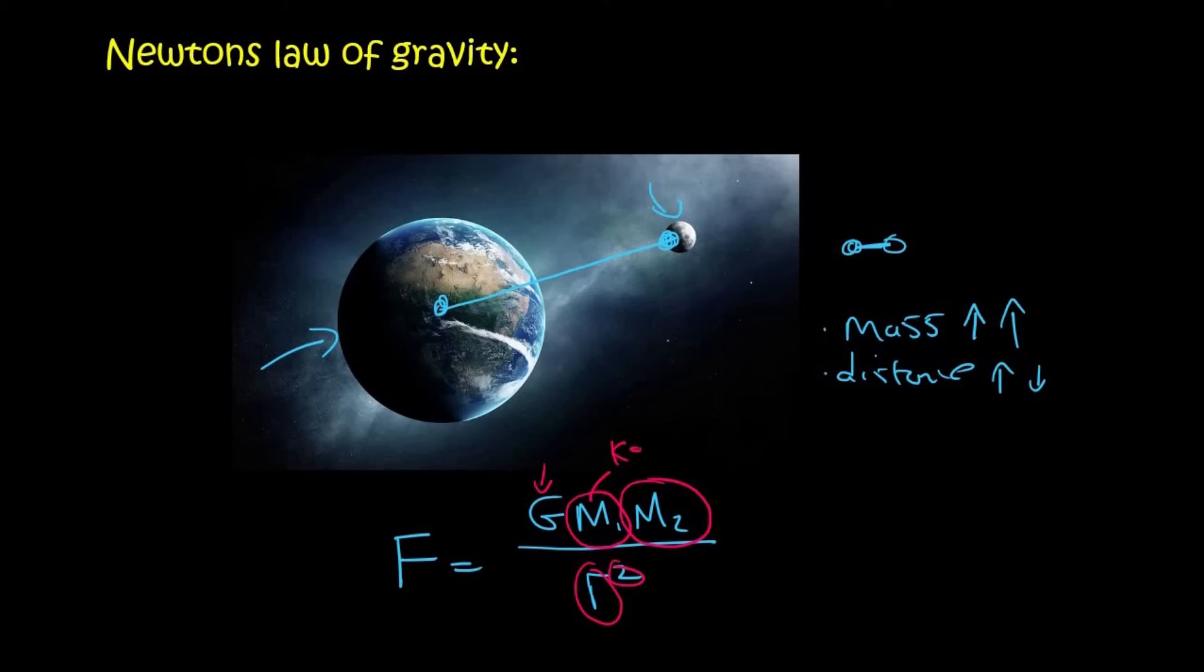Mass will be in kilograms. This mass will be in meters. Now G is a constant. It's a value that you'll get on your formula sheet. And it has a value of 6.67 times 10 to the minus 11.